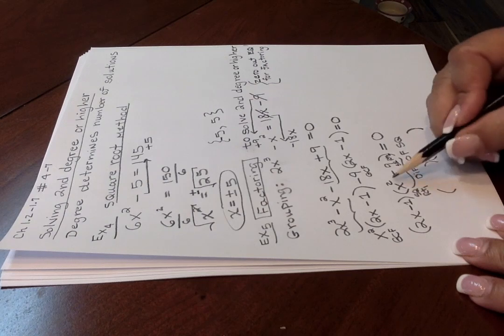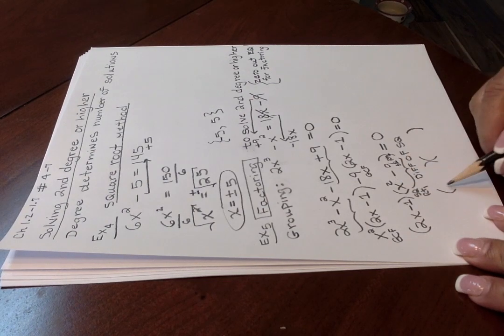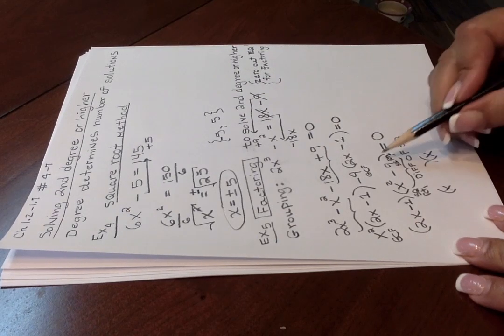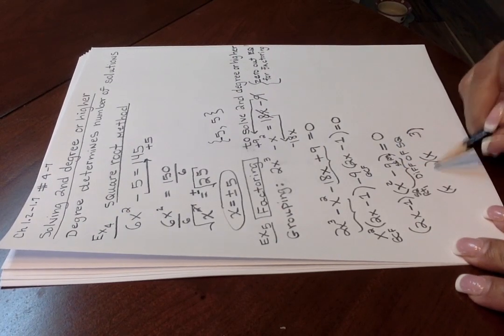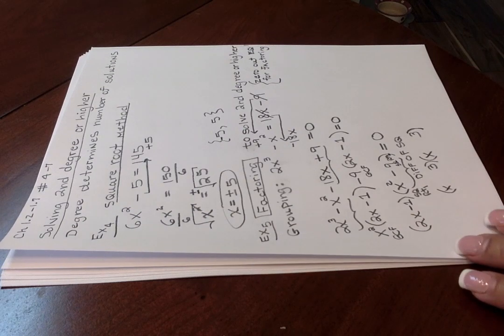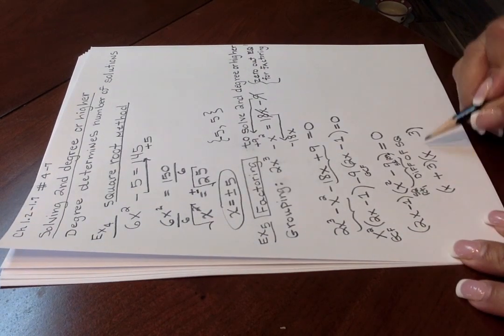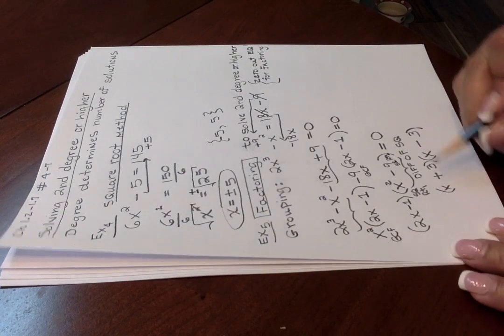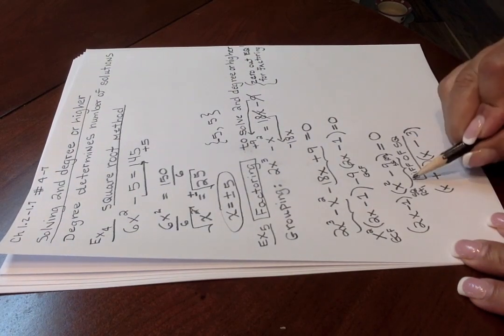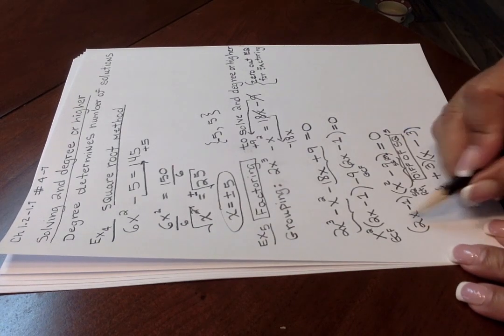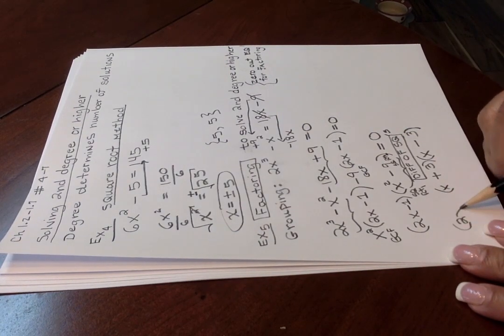Again, take the square root of the front term, which would be x. x times x is x squared. So x is the square root, goes there and there. Take the square root of the back term, which is 3, goes there and there. You put the square roots in both front and back parentheses. And then you alternate the signs when you're factoring using the difference of squares factoring method. Okay, then pull down the 2x minus 1.